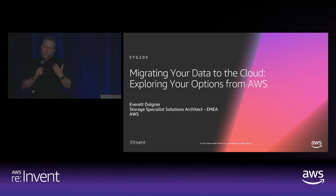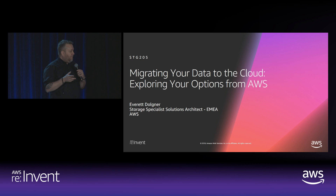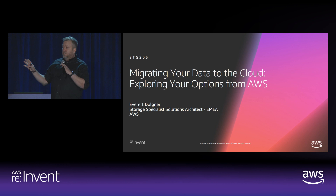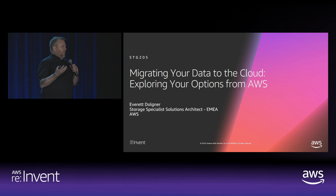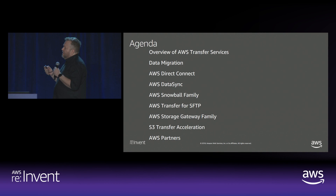My name is Everett Dahlgner. I am the Storage Specialist Solutions Architect for EMEA — imagine having to say that every time you introduce yourself, that's a lot of words. Today we're going to talk about migrating data into AWS. Just to level set, this is a 200 session, so if you're here for code samples or step-by-step instructions on exactly how to do it, that's not this session. We're going to do some high-level stuff, talk about the services, go in depth on things, give tips and tricks where they make sense, and have a little time at the end for Q&A. I live in Germany, by the way, so I have a 19-hour flight home after this.